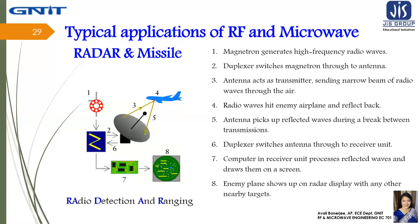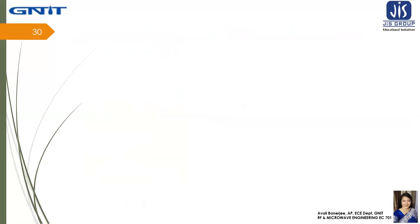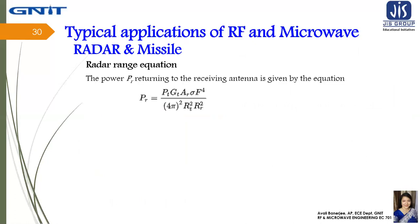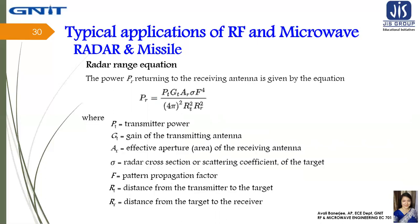Component 7 is the computer in the receiver unit, which processes the reflected waves and draws them on a screen. Component 8: the enemy plane shows up on the radar display along with any other nearby targets. The radar range equation gives the power P_R returning to the receiving antenna as: P_R = (P_T · G_T · A_R · σ · F) / ((4π)² · R_T² · R_R²), where P_T is the transmitter power, G_T is the gain of the transmitting antenna, A_R is the effective aperture of the receiving antenna, σ is the radar cross-section of the target, F is the pattern propagation factor, R_T is the distance from transmitter to target, and R_R is the distance from target to receiver.